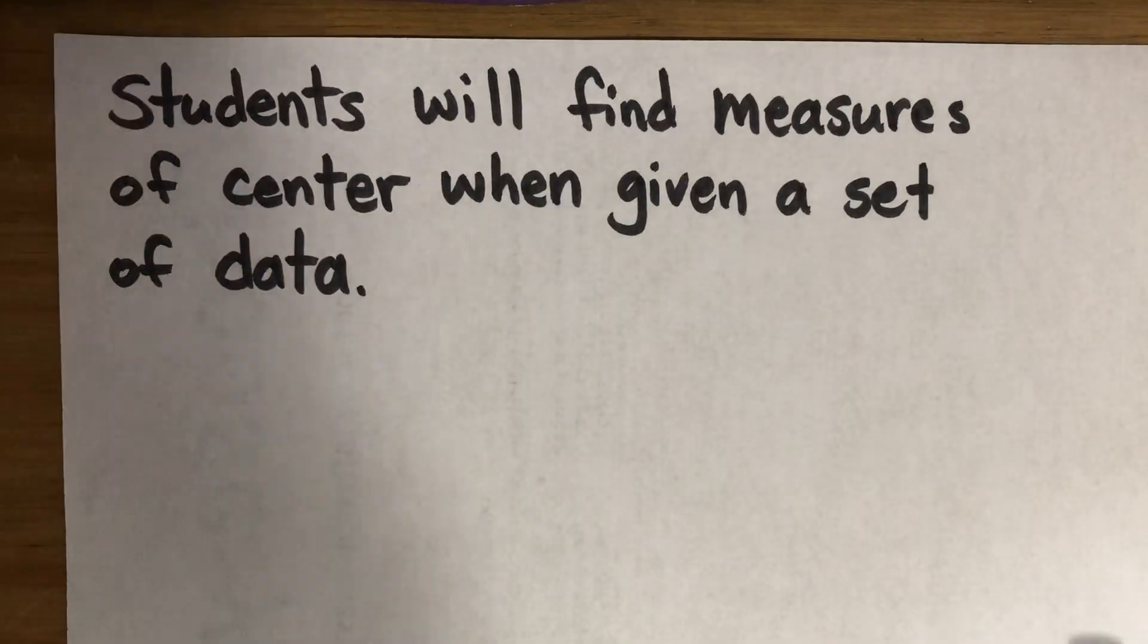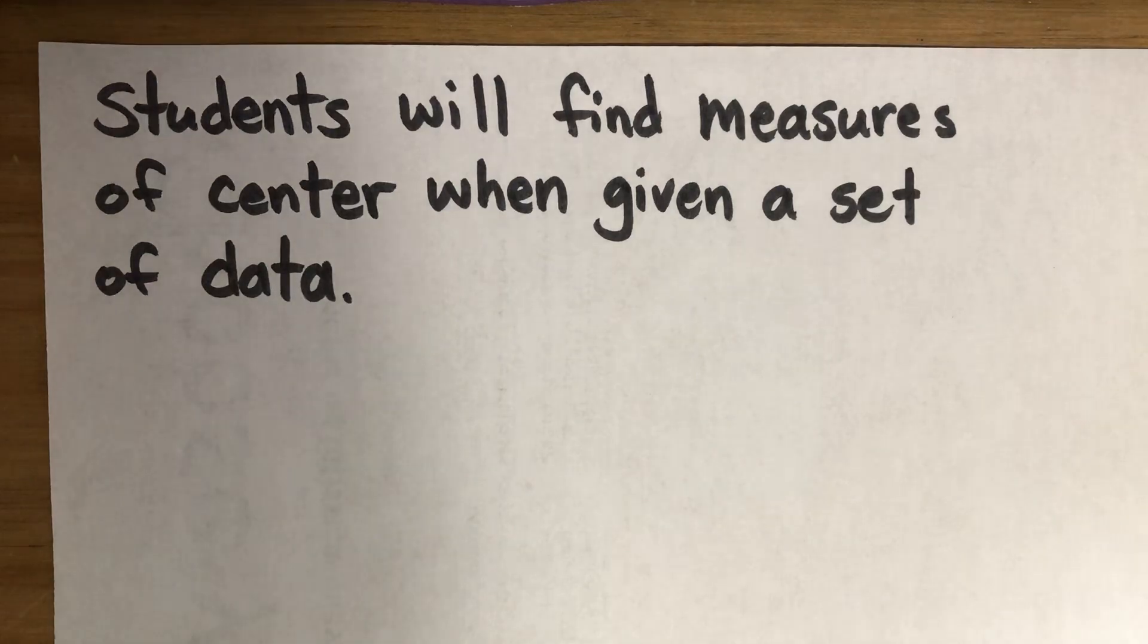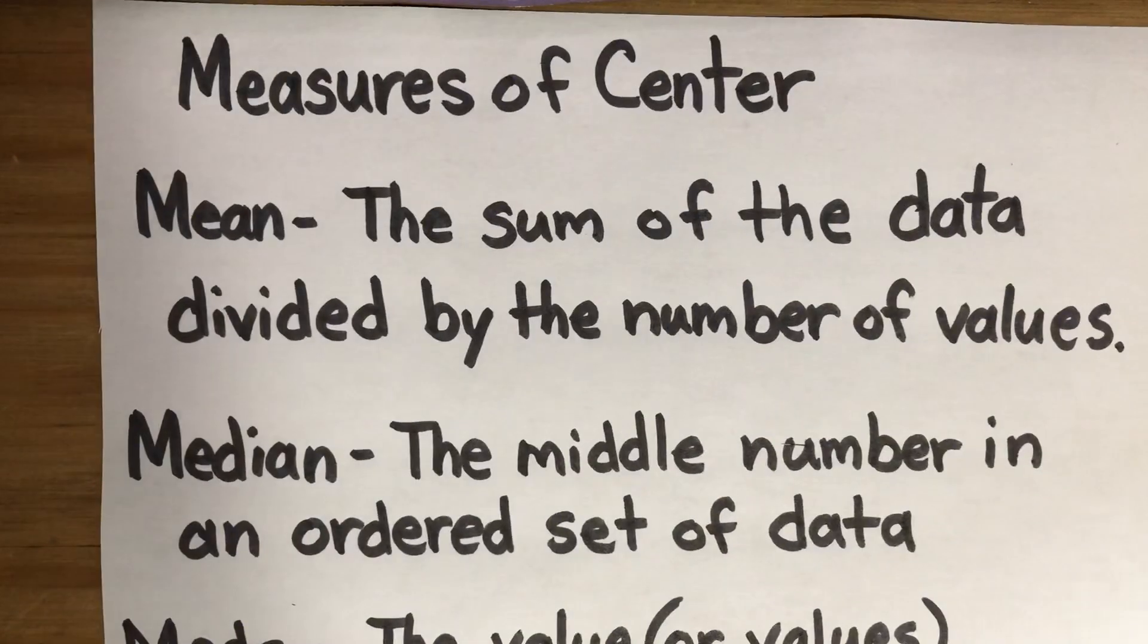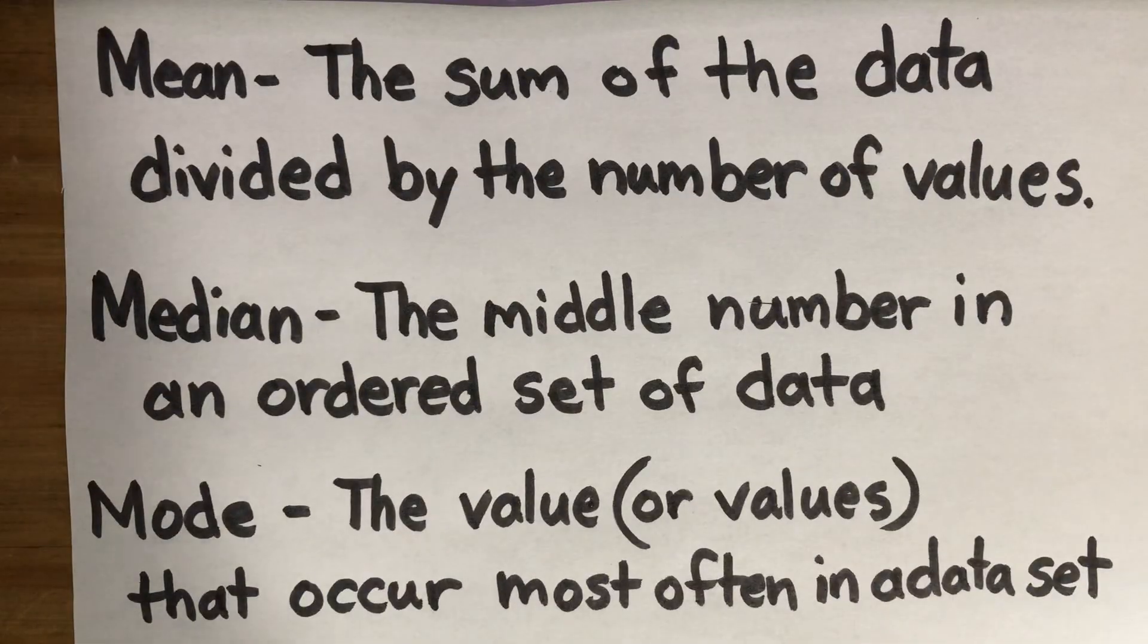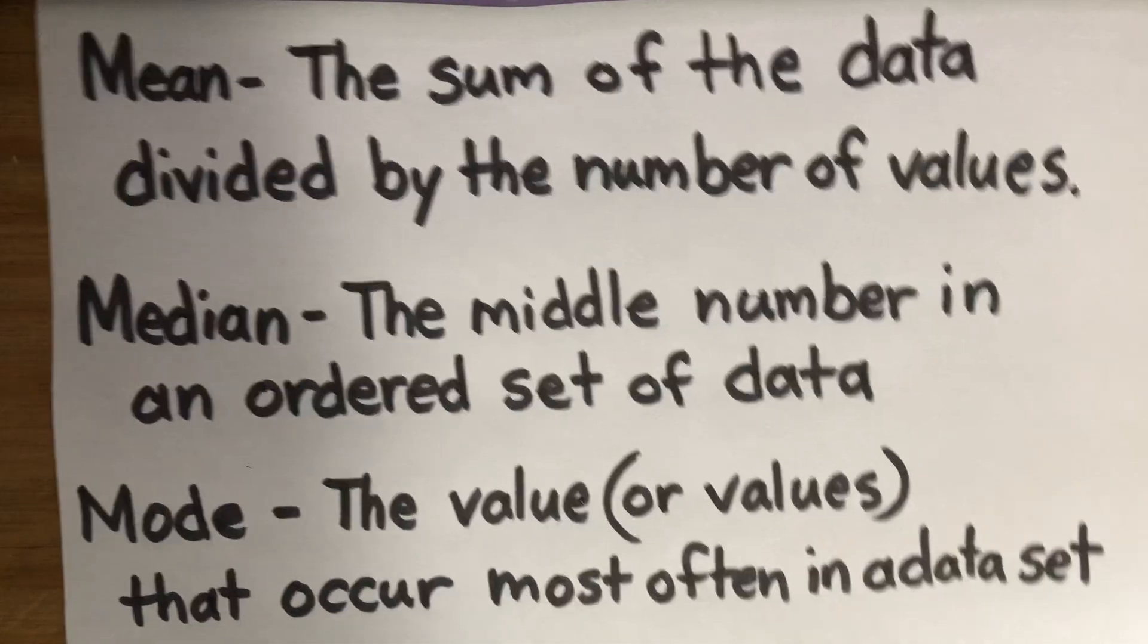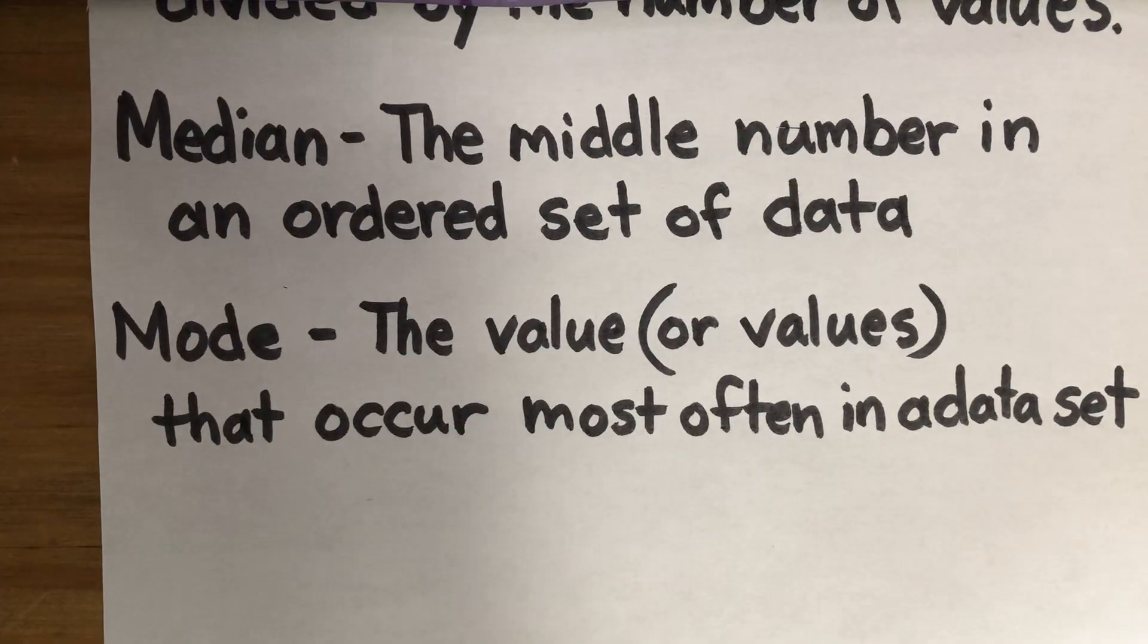All right, we have our second video on measures of center. We want students to be able to find measures of center when given a set of data. Yesterday, we learned that there's the mean, which is the sum of the data divided by the number of values, the median, which is the middle number in an ordered set of data, and the mode, the value or values that occur most often in a data set.